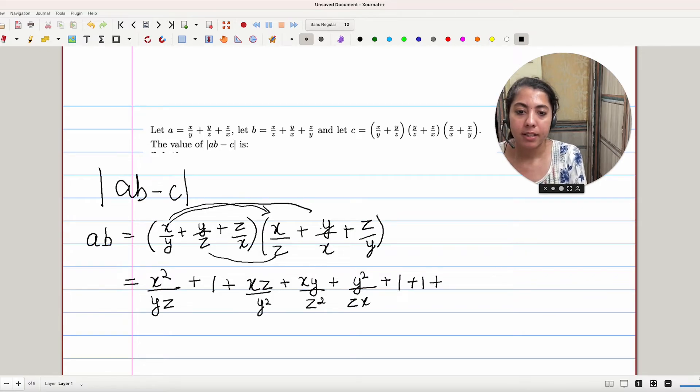(Z/X) times (Y/X) will give us YZ/X² plus the last term will be Z²/XY. This is the value of AB. Let's find C.